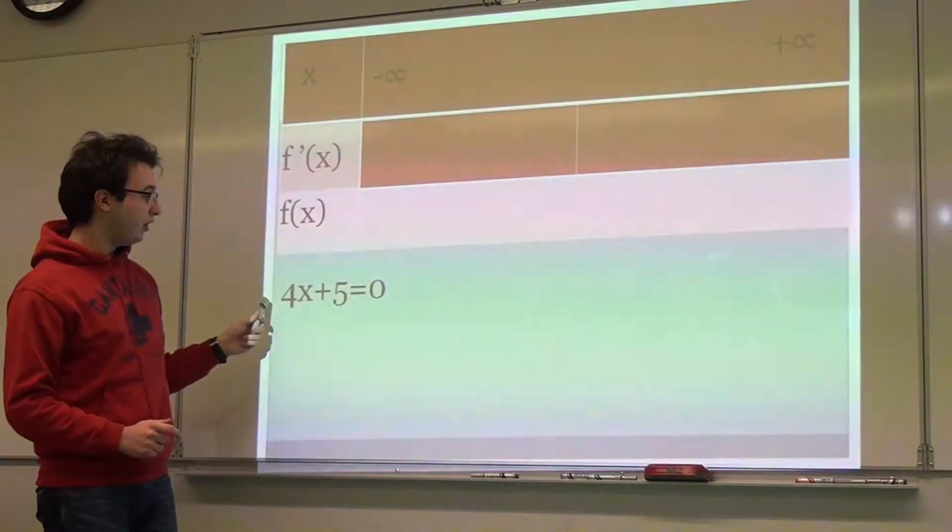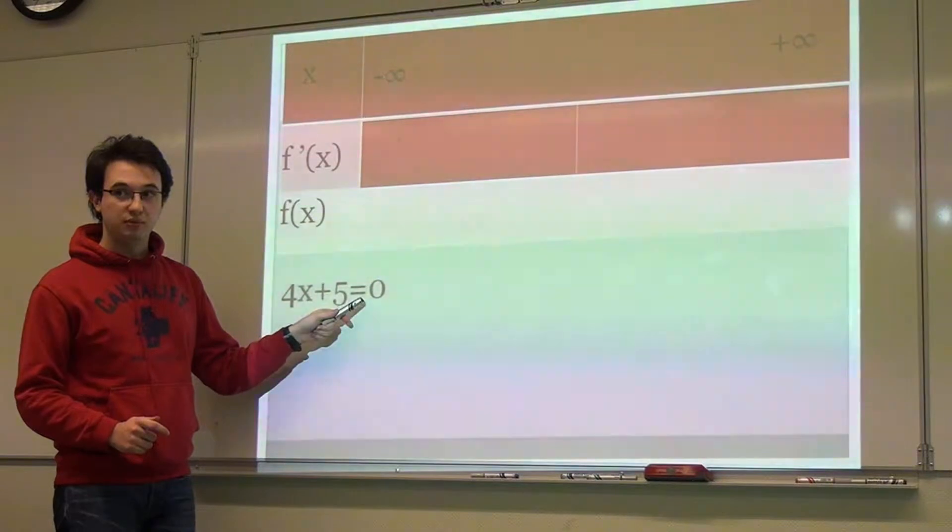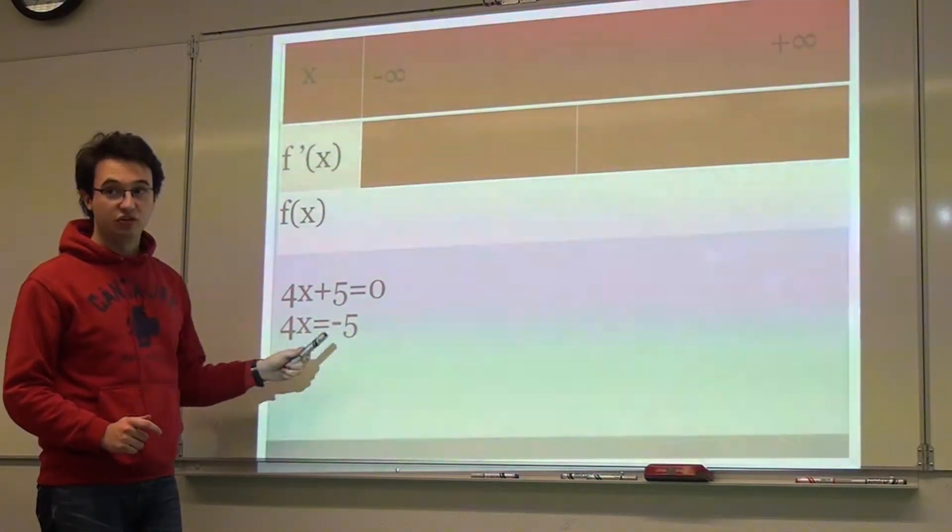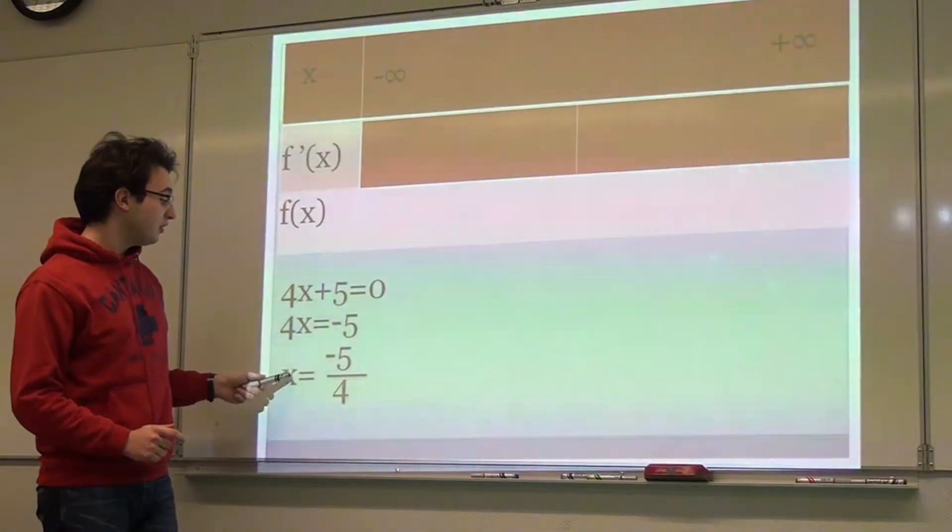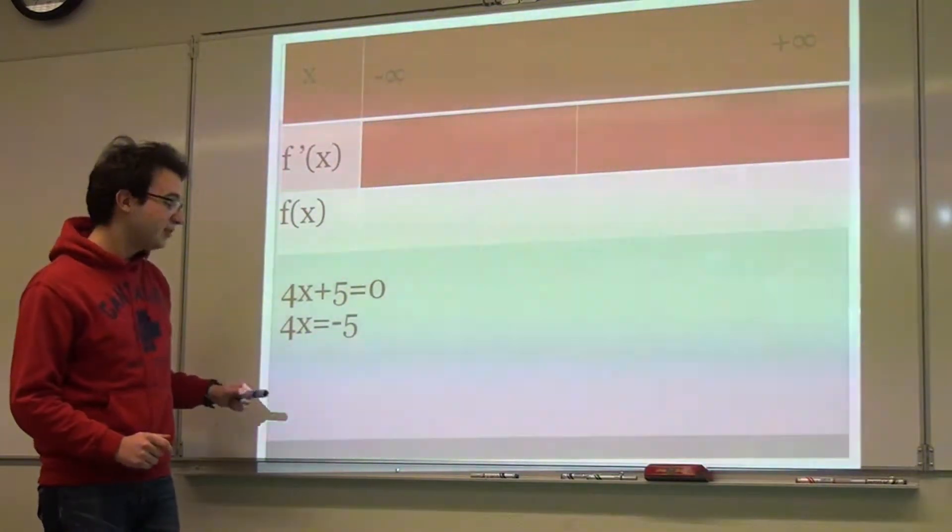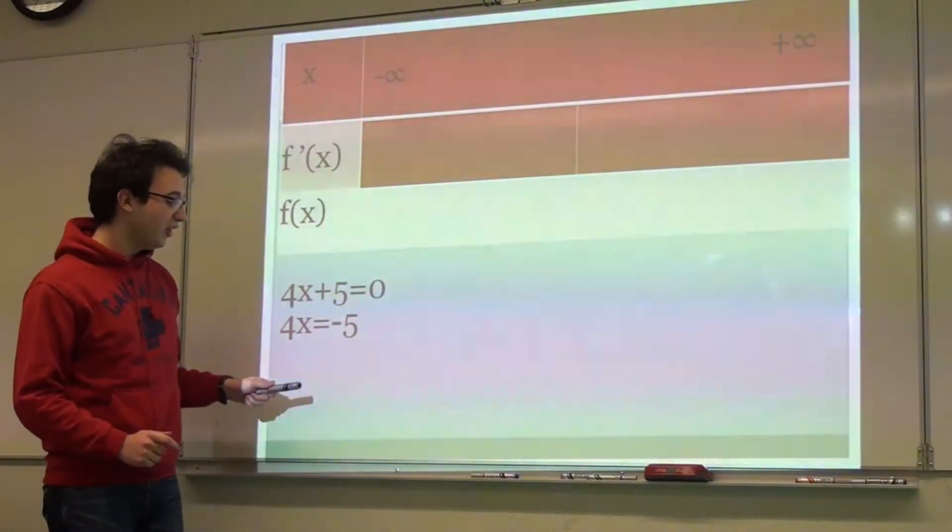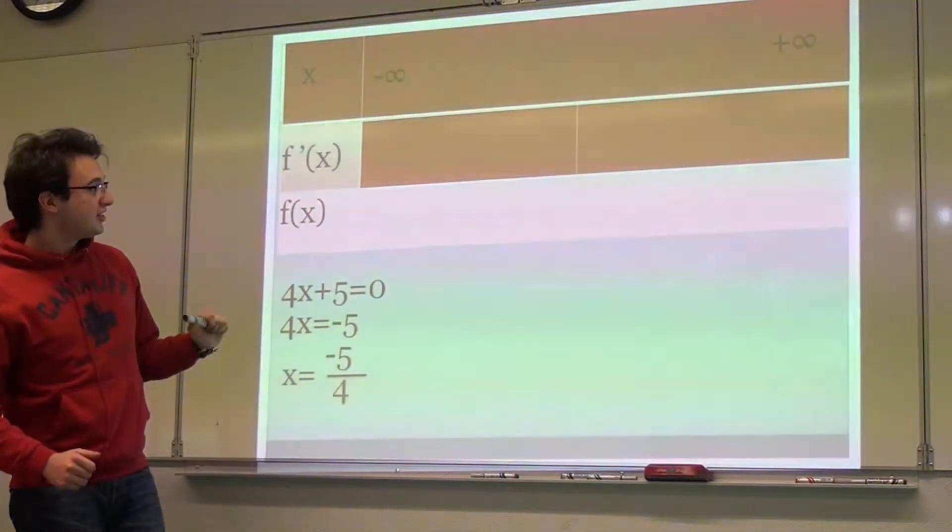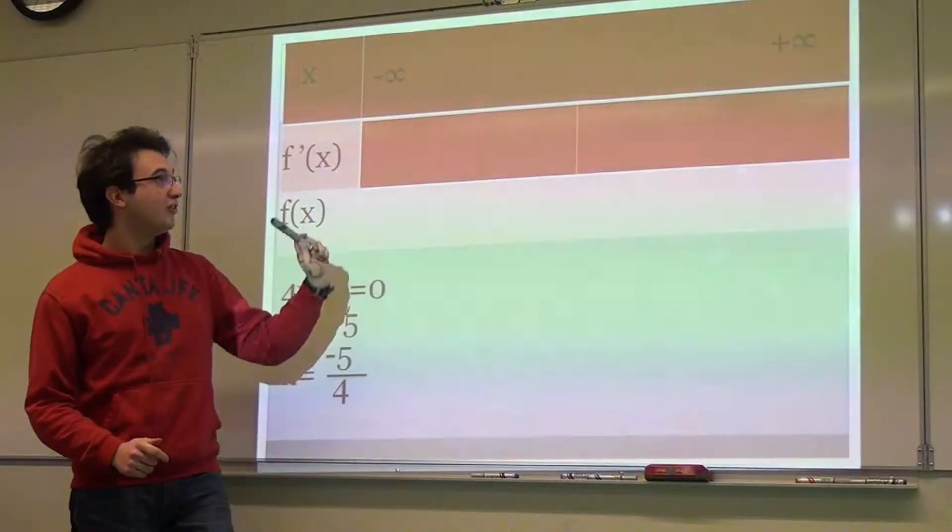So 4x + 5 = 0. Then 4x = -5, which means x = -5/4. So I'm going to put this on the chart.